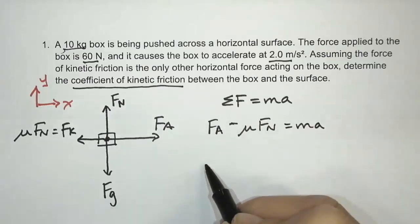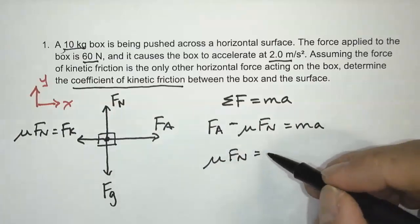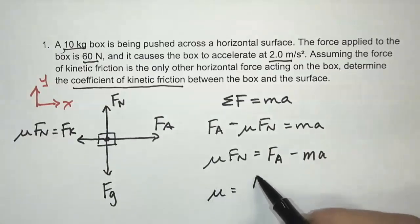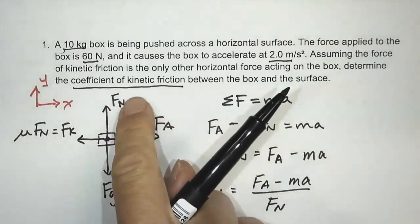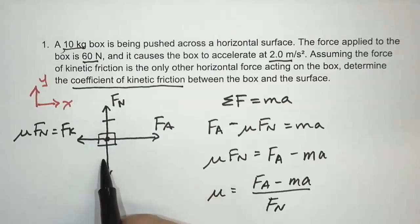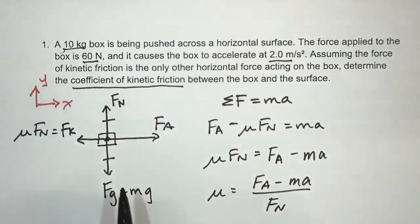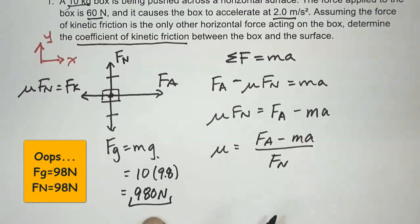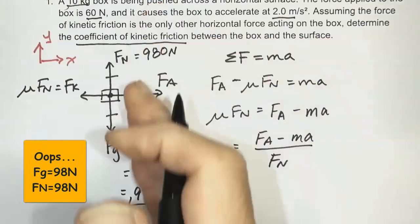I'm looking for mu, so I want to isolate it. Moving mu·Fn to the right and Ma to the left gives: Fa minus Ma equals mu times Fn, so mu equals (Fa minus Ma) divided by Fn. We need to know Fn. Since the box isn't accelerating up or down, the normal force and gravitational force are equal and opposite. So Fg equals mass times 9.8: 10 kilograms times 9.8 gives 98 newtons. So the normal force is also 98 newtons.